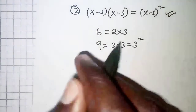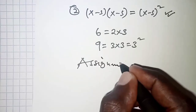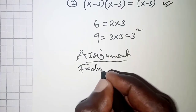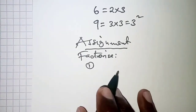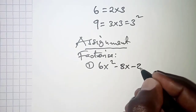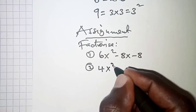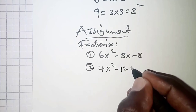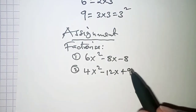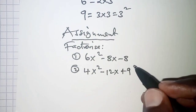Now I want you to try these two questions as an assignment. The first expression to factorize is 6x² − 8x − 8, and the second is 4x² − 12x + 9. As you factorize, try to identify whether each expression is a perfect square or not.